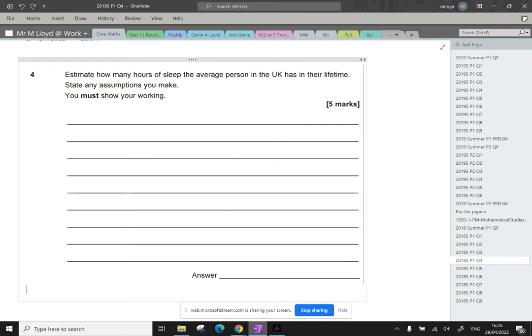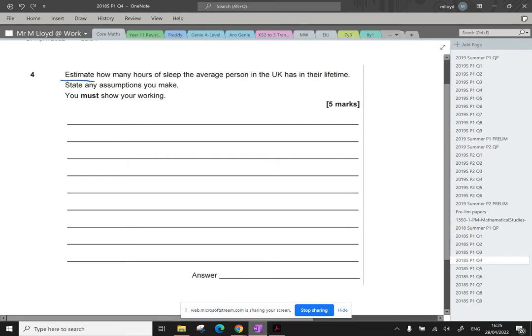Okay, question four, estimate, love this, Fermi estimation. Estimate how many hours of sleep the average person in the UK has in their lifetime. Not too sure why the UK bit is relevant, but there we go. State any assumptions you make. I guess with the lifetime bit, it's about an approximate estimated average age.